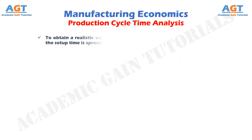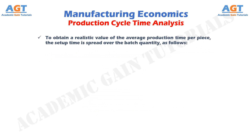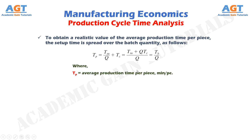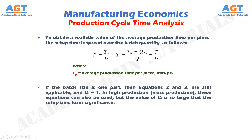To obtain a realistic value of the average production time per piece, the set-up time is spread over the batch quantity as follows: TP equals TSU divided by Q plus TC. Where TP represents average production time per piece, expressed in minutes per piece, and the other terms are as in the previous two equations. If the batch size is one part, then equations 2 and 3 are still applicable with Q equals 1.